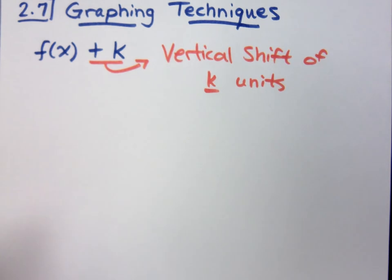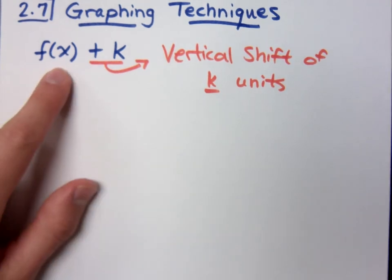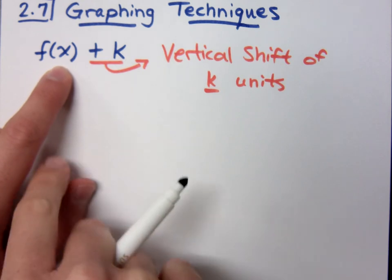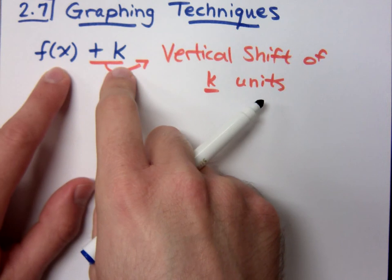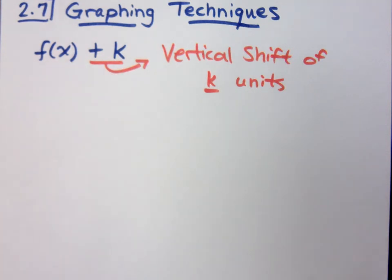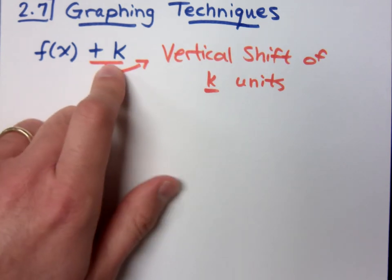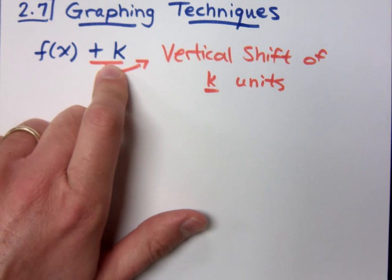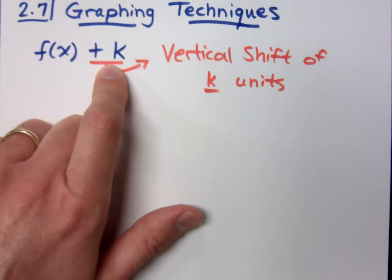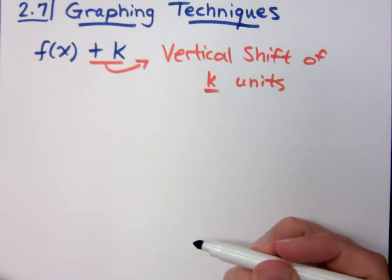When I say f(x) plus k, this f(x) is to represent your basic function, like if it's x squared or the square root of x. You'd see something like the square root of x closed off and then plus a number, or you'd see x squared plus or minus a number. The key thing here is that this number is not going to be inside the function. It's not going to be affected by the square or the square root or the cube. This guy is completely outside of that.